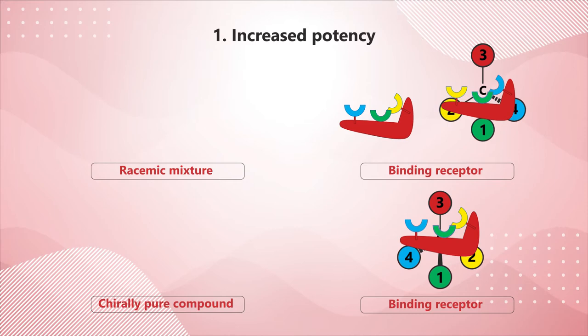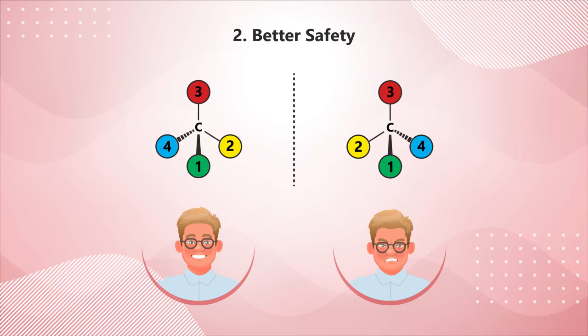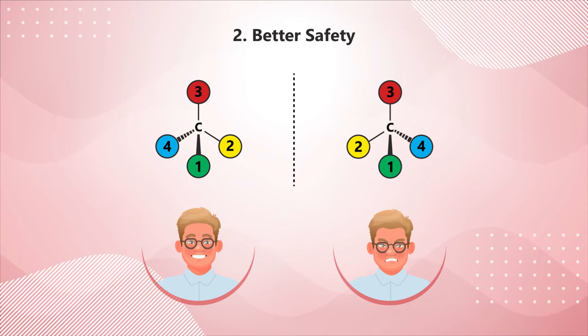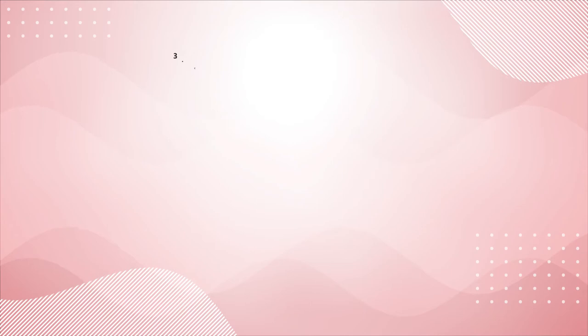It is also observed that for some chiral compounds, one of the enantiomers has a greater tendency to produce adverse events. A chirally pure compound which excludes the adverse-event-causing enantiomer makes the treatment safer.